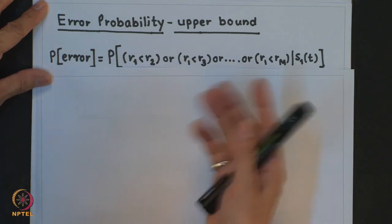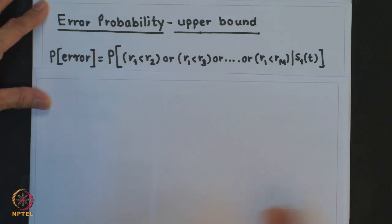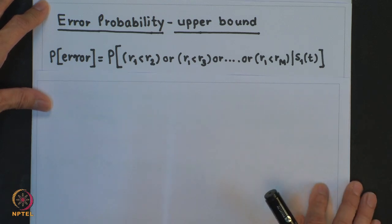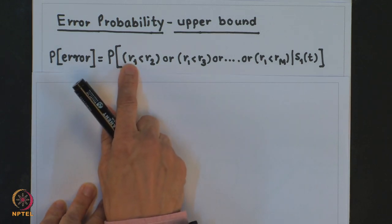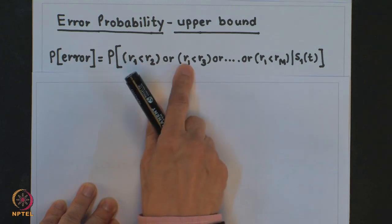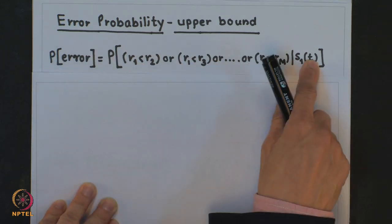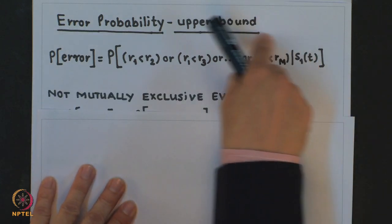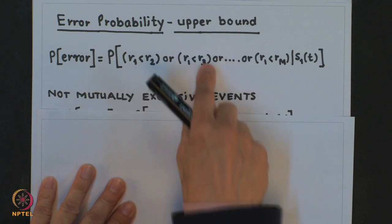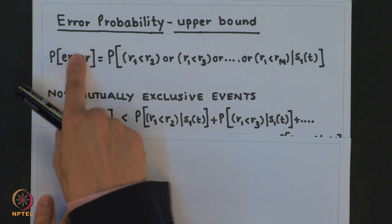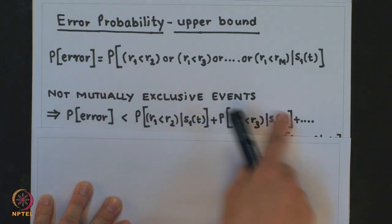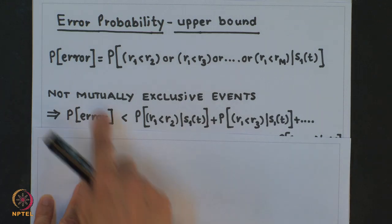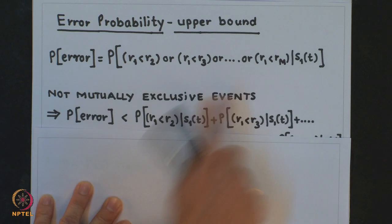The probability of error, given that S_1(t) was transmitted, equals the probability that R_1 < R_2, or R_1 < R_3, and so on. Since these are not mutually exclusive events, the probability of error is less than the sum of each individual conditional error probability.